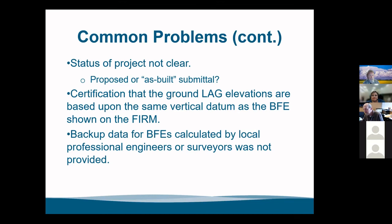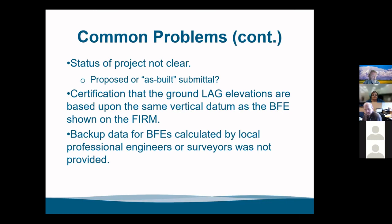Common problems when submissions come in: incomplete submissions, missing forms, or signed by the wrong party — maybe the property owner signed off on the elevation when they're not a surveyor. They might not have paid the right amount. Most of these cost money. Or they might omit a grading plan — not specific to all requests, but required for some removals. The lowest adjacent grade might not be given. Maybe the status isn't clear — is this as-built or a proposed structure? There's also the issue of certification that the lowest adjacent grade elevations are based on the same vertical datum. We've got different vertical data in Nebraska — survey data from 1929, data from 1988, and now new data coming out based on satellites rather than discs in the ground. Make sure the elevation data you're providing matches the datum on the documents you provide.